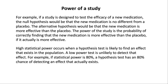High statistical power occurs when a hypothesis test is likely to find an effect that exists in the population. A low power test is unlikely to detect that effect. For example, if statistical power is 80%, a hypothesis test has an 80% chance of detecting an effect that actually exists.